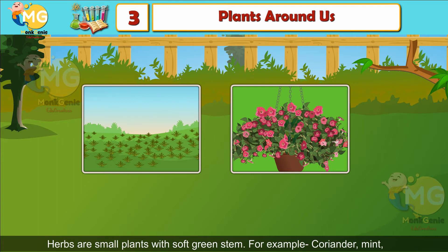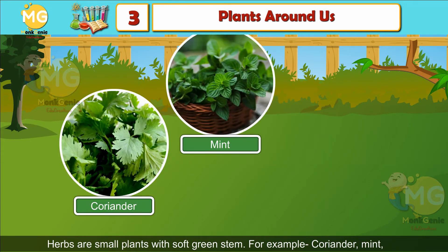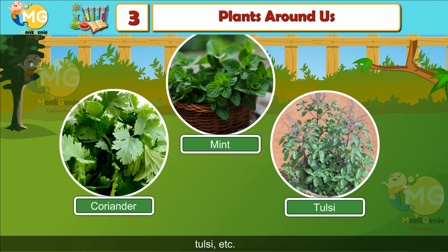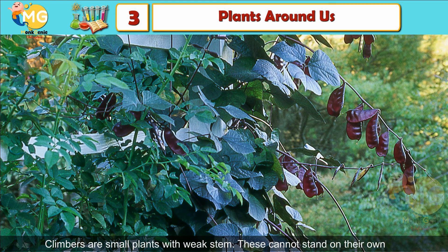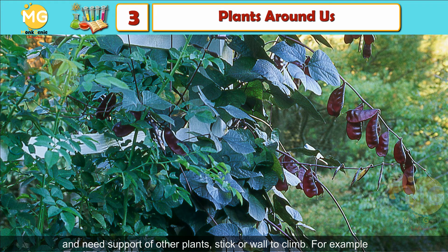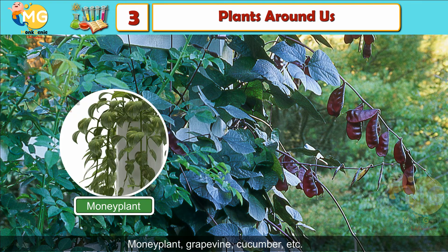Herbs are small plants with a soft green stem. For example, coriander, mint, tulsi, etc. Climbers are small plants with a weak stem — they cannot stand on their own and need the support of other plants, a stick, or a wall to climb. For example, money plant, grapevine, cucumber, etc.